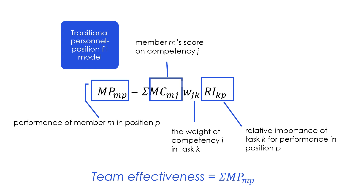Team effectiveness can be represented as the sum of performance of M in position P. The implicit assumption of the traditional personnel position fit model is that the performance of members in different positions simply additively contributes to overall team success in an unweighted fashion. This assumption has rarely been directly investigated in research examining the contribution of members' performance of task roles to team effectiveness. This is why, in practice, selecting highly skilled individuals doesn't necessarily yield high team performance.